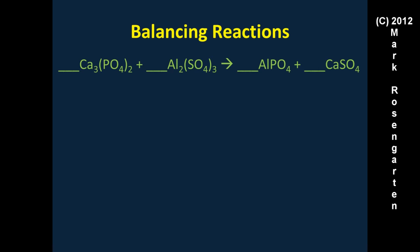The last example looks complex but is actually straightforward. We have three calciums on the left and one on the right — put a three in front. Two phosphates on the left and one on the right — put a two in front. Putting a two in front also balances the two aluminums on each side. Three sulfates on the left are already handled by the three coefficient. It looked difficult but balanced easily. Stay focused, and that is how to balance chemical reactions — now go try some on your own.